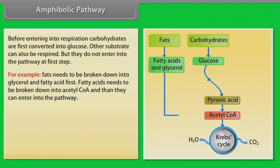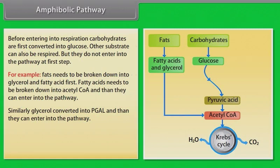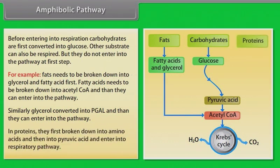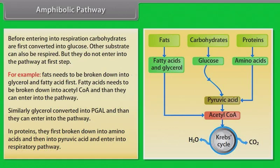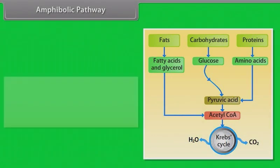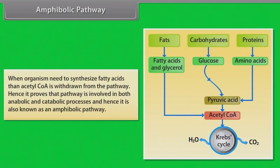Amphibolic pathway: Fatty acids need to be broken down into acetyl CoA before they can enter the respiratory pathway. Similarly, glycerol is converted into PGAL to enter the pathway. Proteins first break down into amino acids and then into pyruvic acid to enter the respiratory pathway. When an organism needs to synthesize fatty acids, acetyl CoA is withdrawn from the pathway. Hence, the pathway is involved in both anabolic and catabolic processes and is known as an amphibolic pathway.